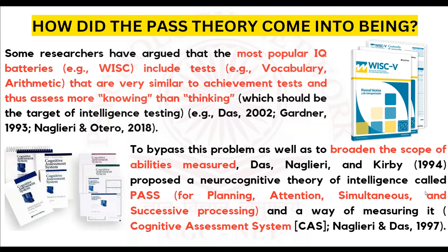So Das, Nagliari, and Kirby in 1994 proposed a neurocognitive theory of intelligence called the PASS model. PASS stands for Planning, Attention, Simultaneous, and Successive processing. To measure these four things, they developed the Cognitive Assessment System.